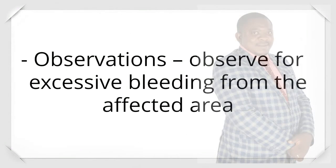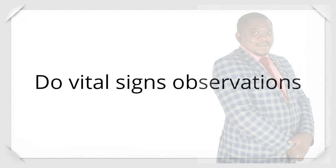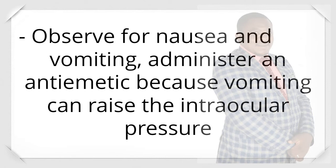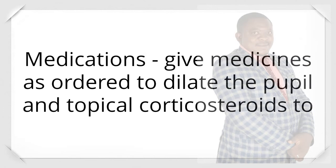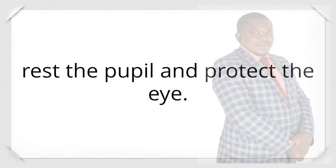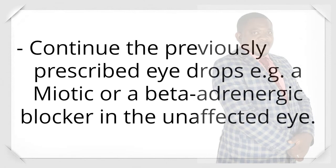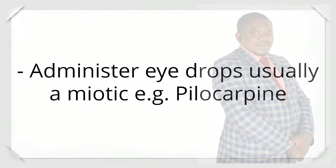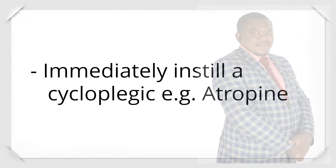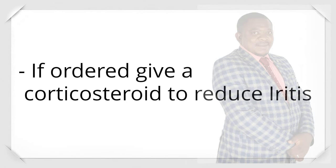Postoperative nursing care — observations: observe for excessive bleeding from the affected area, do vital signs, and observe for nausea and vomiting; administer an antiemetic because vomiting can raise the intraocular pressure. Medications: give medicines as ordered to dilate the pupil and topical corticosteroids to rest the pupil and protect the eye. Give an analgesic to relieve pain and a beta-adrenergic blocker to reduce pressure. Continue the previously prescribed eye drops such as a miotic or beta-adrenergic blocker in the unaffected eye. Administer eye drops — usually a miotic such as pilocarpine — and immediately instill a cycloplegic such as atropine. If ordered, give a corticosteroid to reduce iritis.